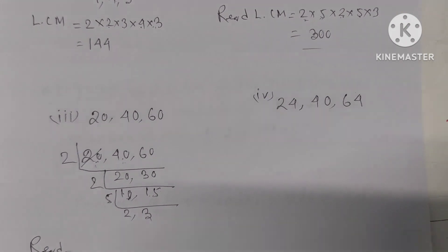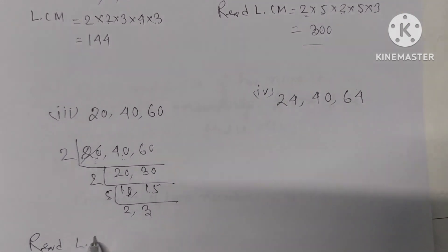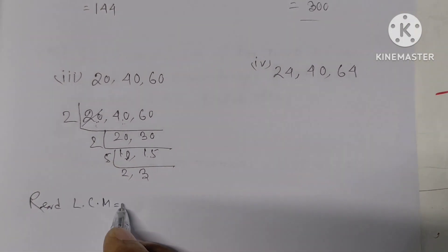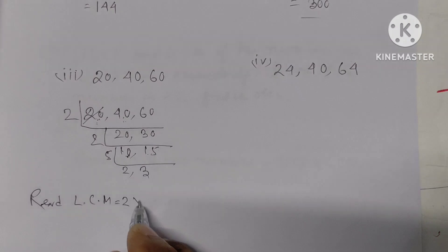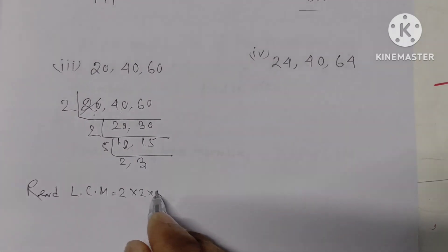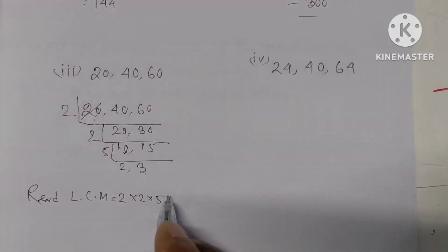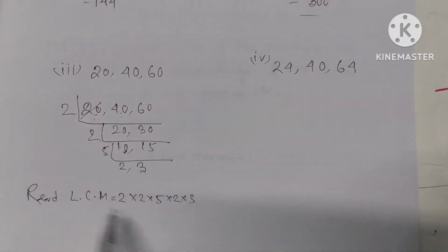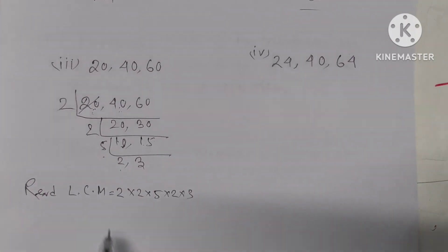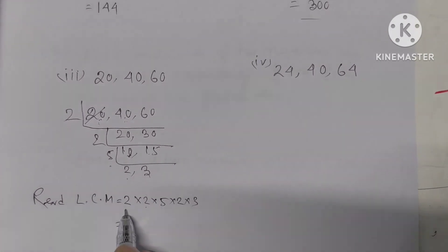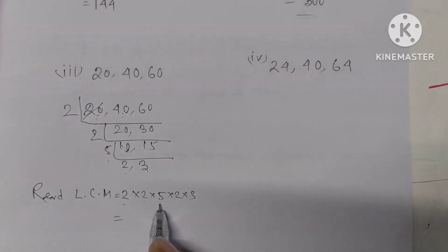For the numbers 20, 25, and 30, we have to multiply the factors: 2 into 2 into 5 into 2 into 3. Multiply them together to get the LCM.